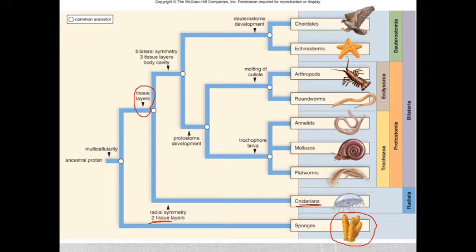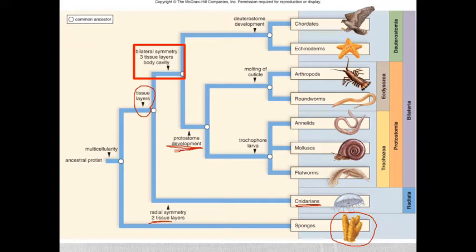Today we'll be focusing on this next clade. Here we have the development of bilateral symmetry, three tissue layers instead of just two, and of course with that, a body cavity. As we go through this, it will be kind of a who's who of the animal kingdom. Your focus should be less on the names and more on the actual developments, the actual adaptations that are going to give rise to these successful groups of organisms.